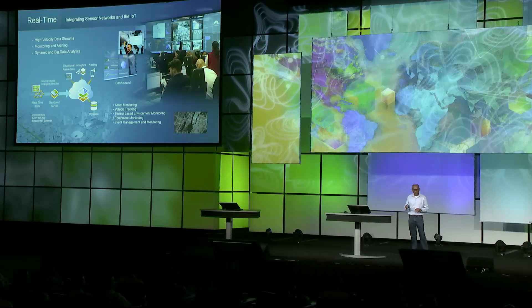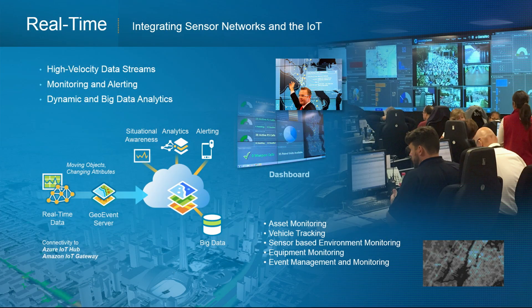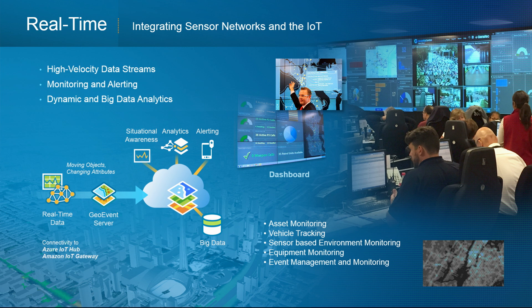Real-time is another really important area, used for asset monitoring and vehicle tracking. The Internet of Things is all about sensors and measurements that flow in for real-time analytics, as well as archiving and subsequent batch analytics. We have connectivity to the Azure IoT Hub and the Amazon IoT Gateway, and real-time is a key part of the platform, especially when coupled with geo-analytics.